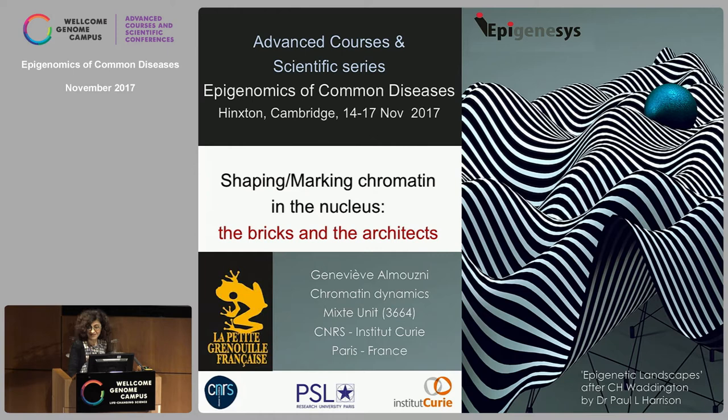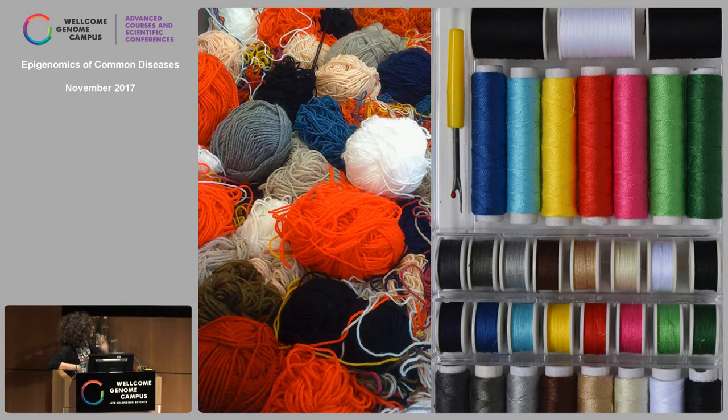Another view is a sewing kit, which is also how you can think about getting things organized. I quite like the idea of having different types of tools and different types of colours. This gets to the idea of different domains in chromatin with the distribution of marks that we can think of.